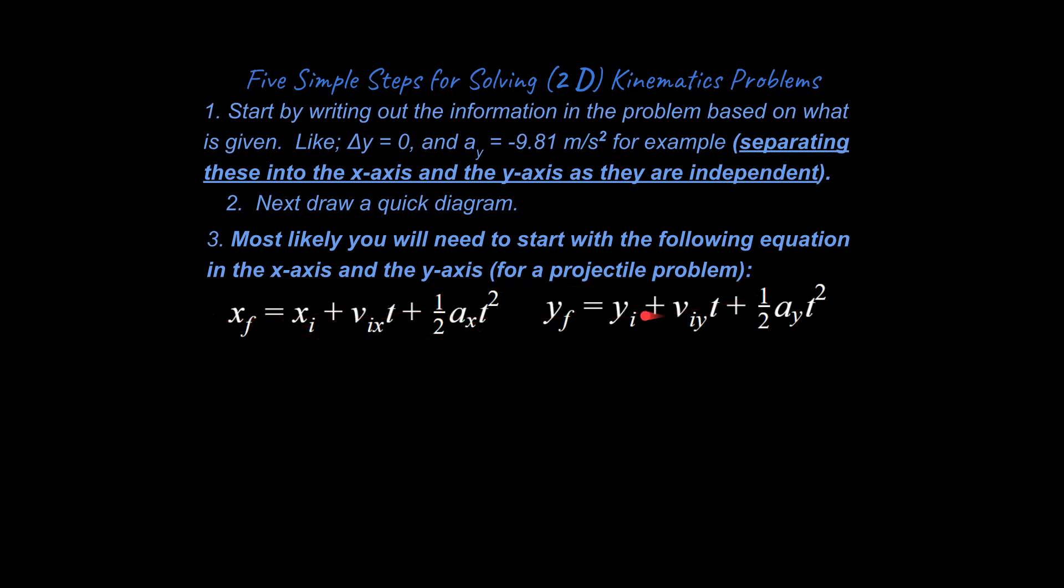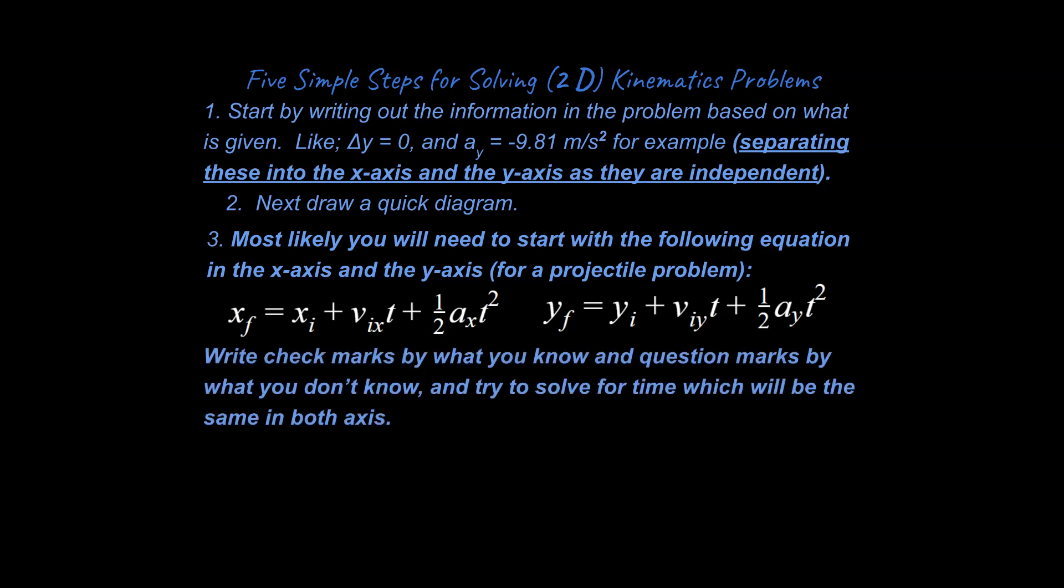The next thing I want you to be aware of is please write check marks by what you know and question marks by what you don't know. And try to solve for time which will be the same in both axes. So none of these variables here are going to be the same except for time. Time is going to be the same in the x-axis and the y-axis. Or at least most likely none of these variables will be at the same value except for time, which is essentially by definition going to be the same in the x and the y-axis. So if you can solve for time, usually you're going to solve for time in the y and then apply that time over here in the x. The check marks and question mark things is something I've been doing for years. It seems to help students. I think you should do this. Some people will listen to me and some people will not. And it's totally up to you. But if you listen, even if you're a smart person, if you listen your chances of making a little mistake that threw off your entire problem go down.